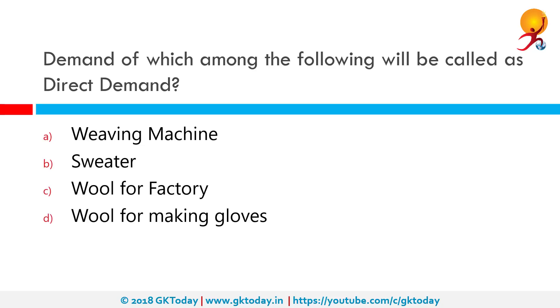Demand of which among the following will be called as direct demand? Direct demand refers to demand for goods meant for final consumption. It is the demand for consumer goods like food items, ready-made garments and houses.